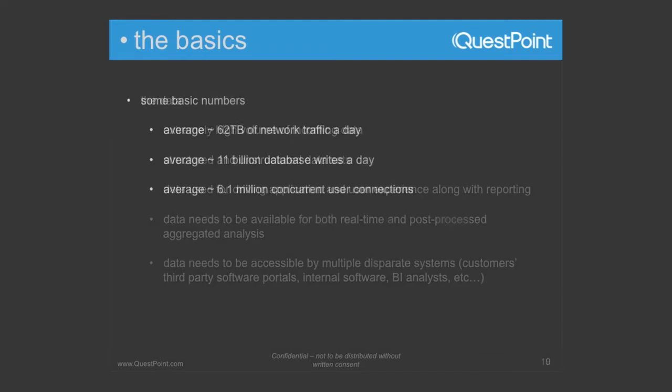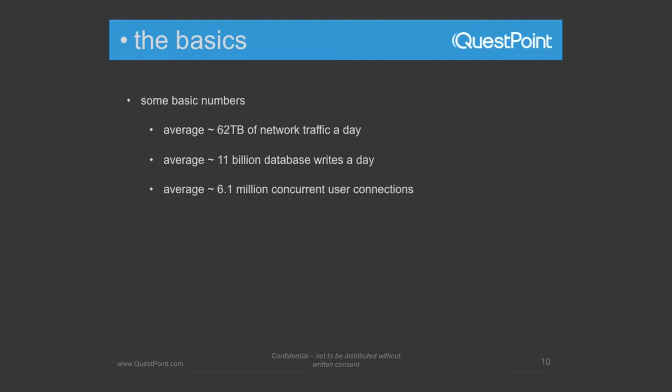Let's get into some basic numbers. Our current average network traffic is about 62 to 65 terabytes a day. Database writes alone — we do over 11 billion, which I think is around 125,000 a second. And our concurrent users are around 6.1 million. So we are always busy. Having such a big geo footprint, we have users online every second of the day.